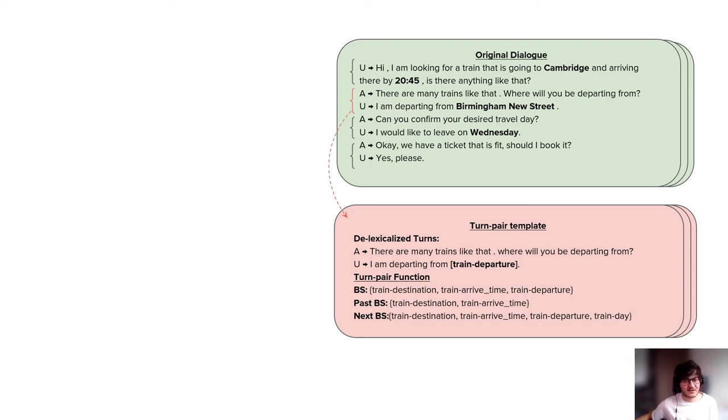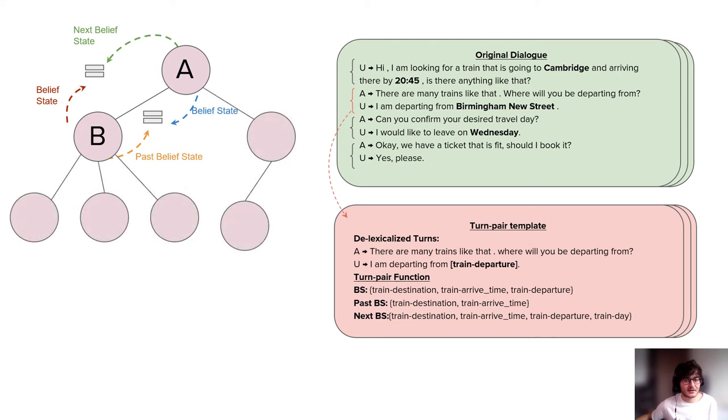We regard the combination of these three sets as the function of the turn pair in a given dialogue. We then construct a tree structure by adding these templates end-to-end as long as their functions are in harmony. In order to add a turn pair B to the tail of turn pair A, two conditions has to be met. First one is that B's belief state has to be equal to A's next belief state. And secondly, B's past belief state has to be equal to A's belief state. This makes sure that the coherency of the dialogues is not broken. We then keep adding into this tree structure until all possible combinations are employed.